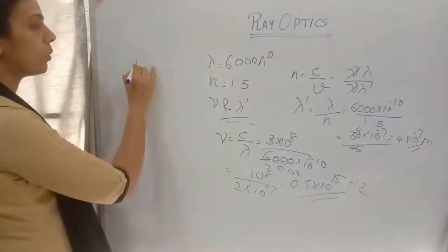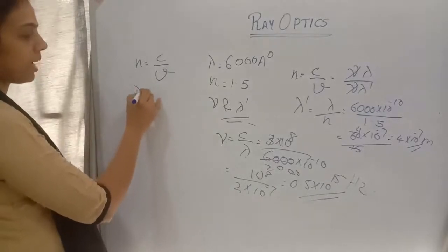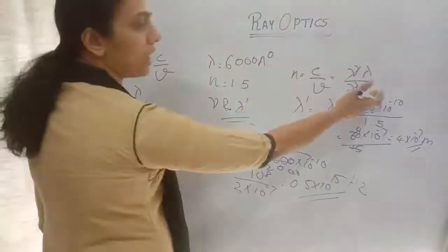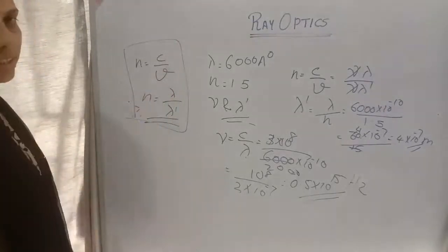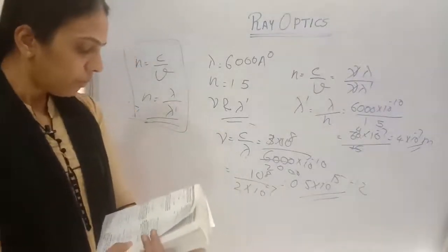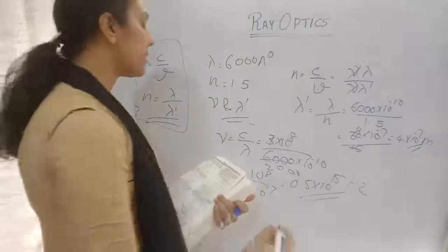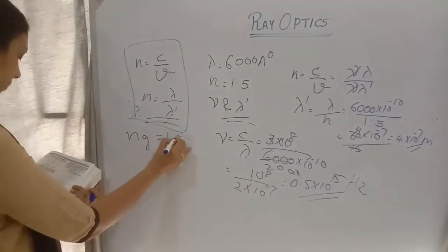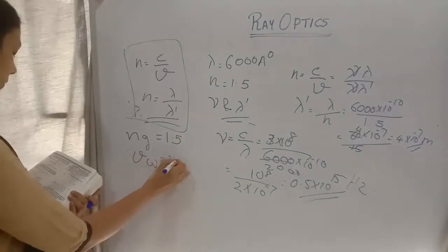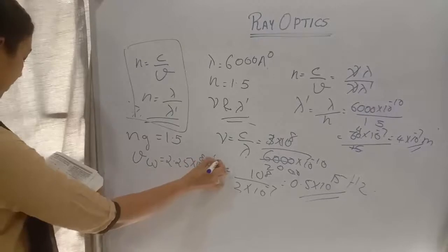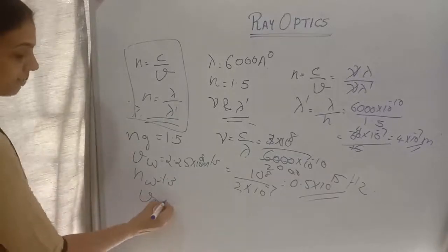In this numerical we are using only the formulas n = C/V and λ/λ' = n. These two formulas are what we use. Second question: What is the speed of light in glass of refractive index 1.5? The speed of light in water is 2.25 × 10⁸ m/s and the refractive index of water is 1.3. We need to find the velocity of light in glass.